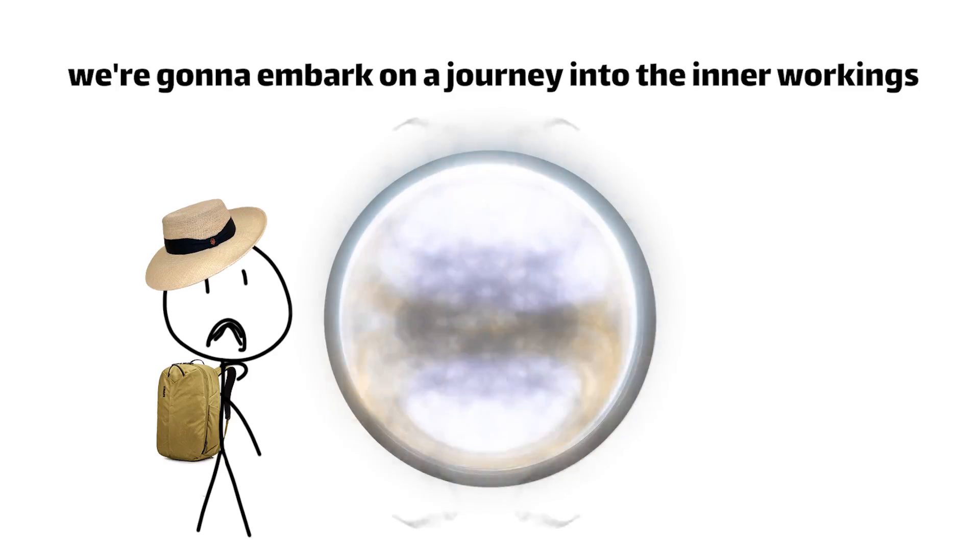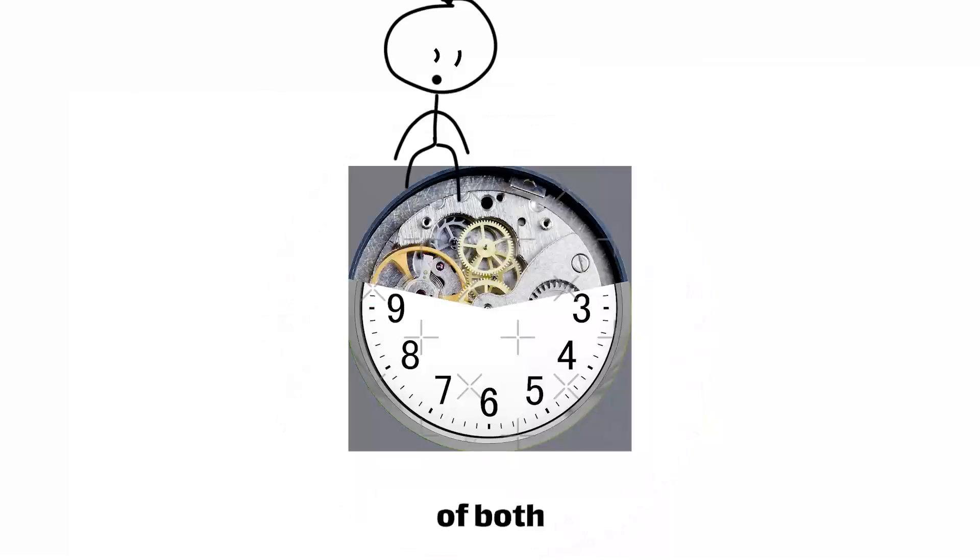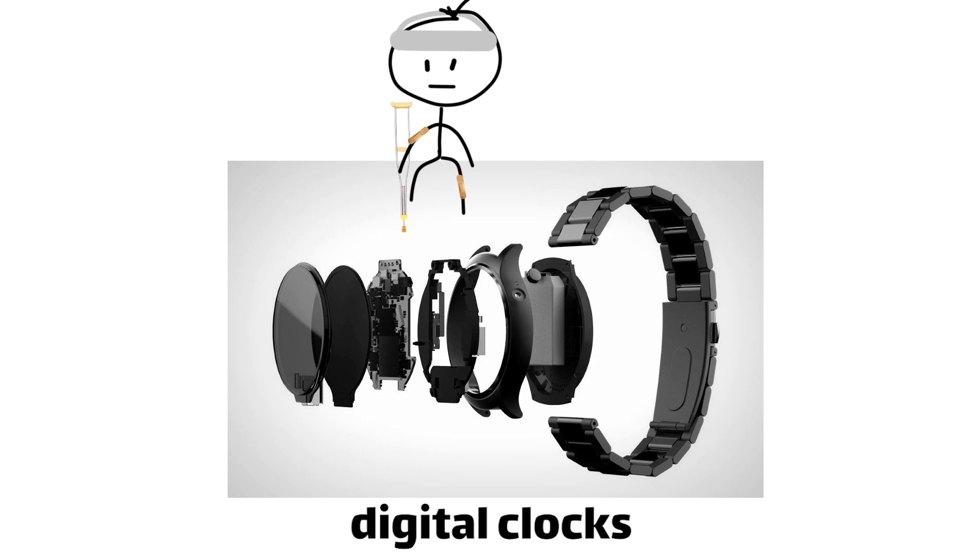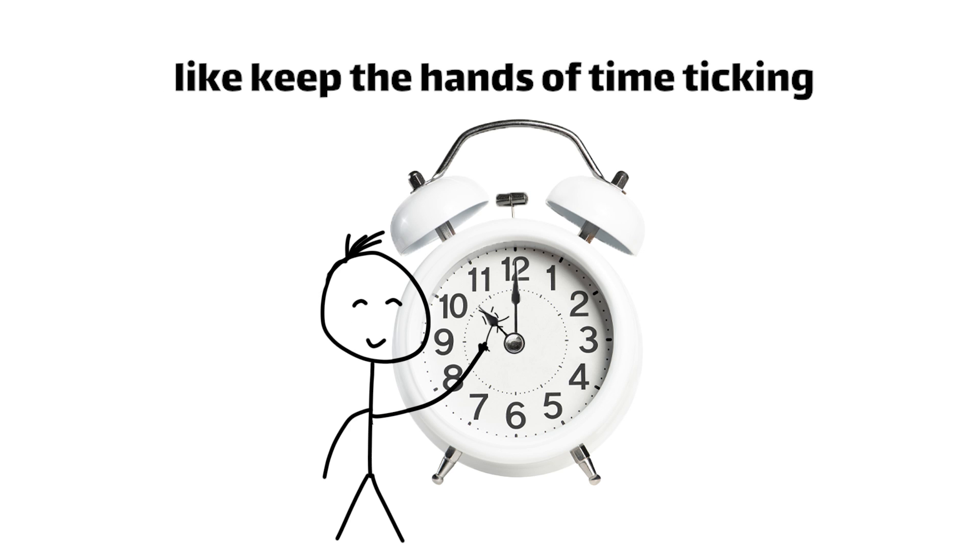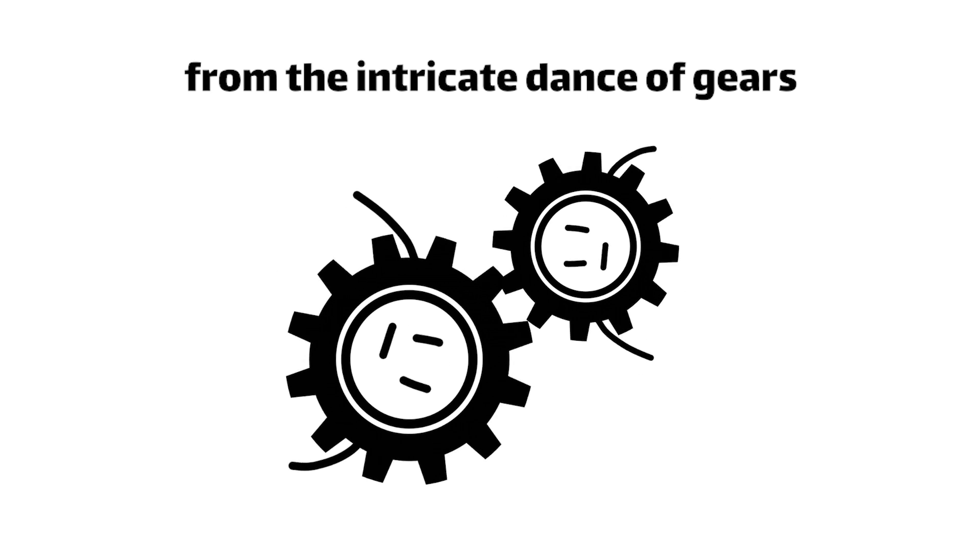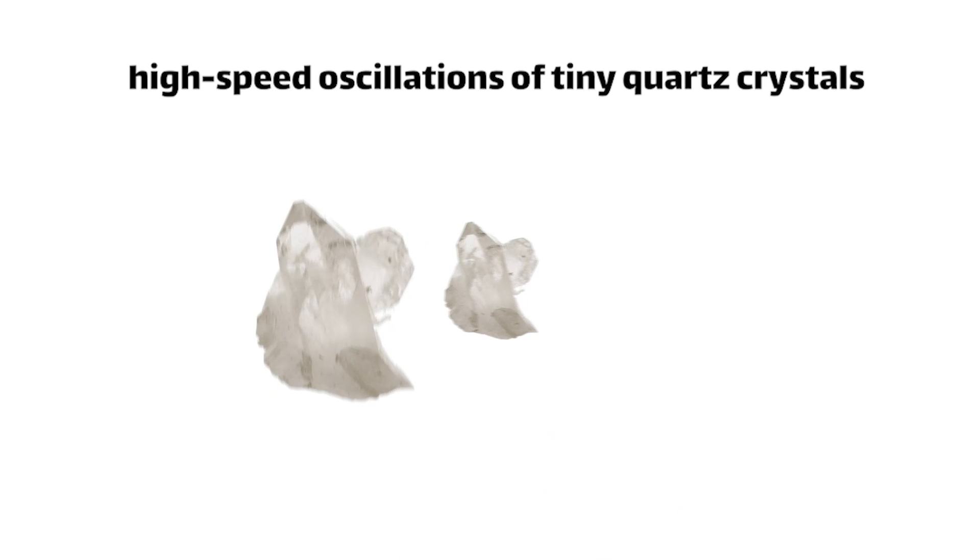But have you ever wondered just how these time-telling devices actually work? How is it that a simple wall clock or the high-tech gadget on your wrist can keep such an incredibly precise time, day after day, year after year?